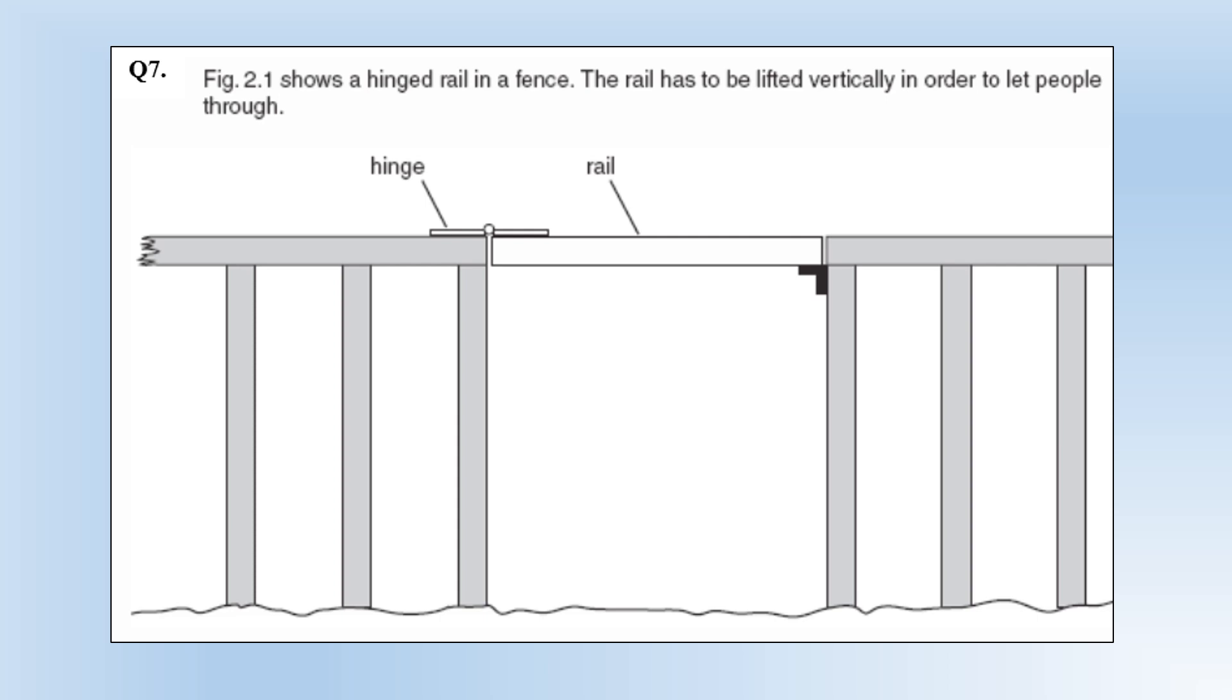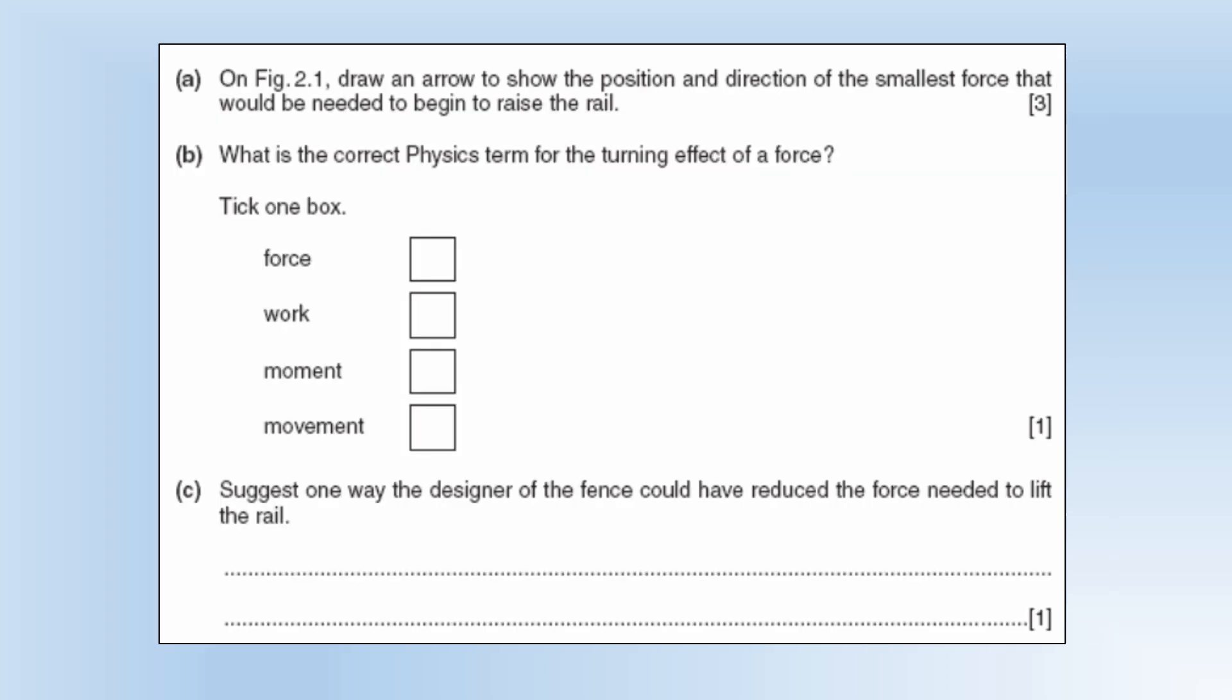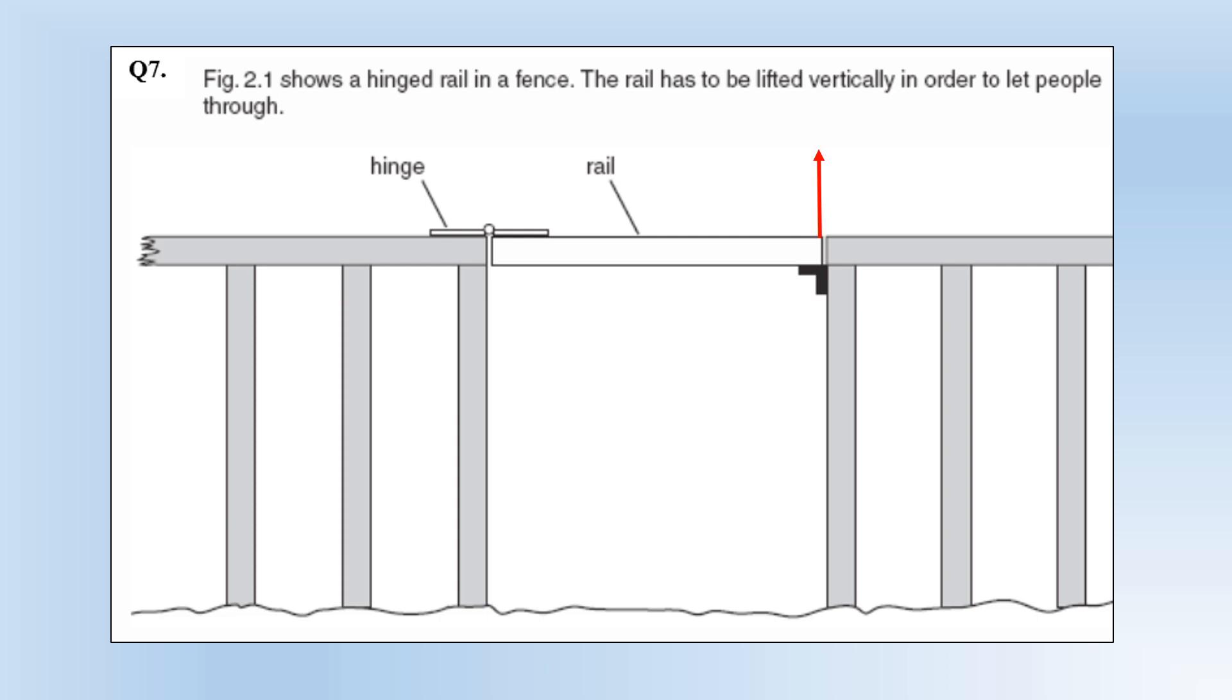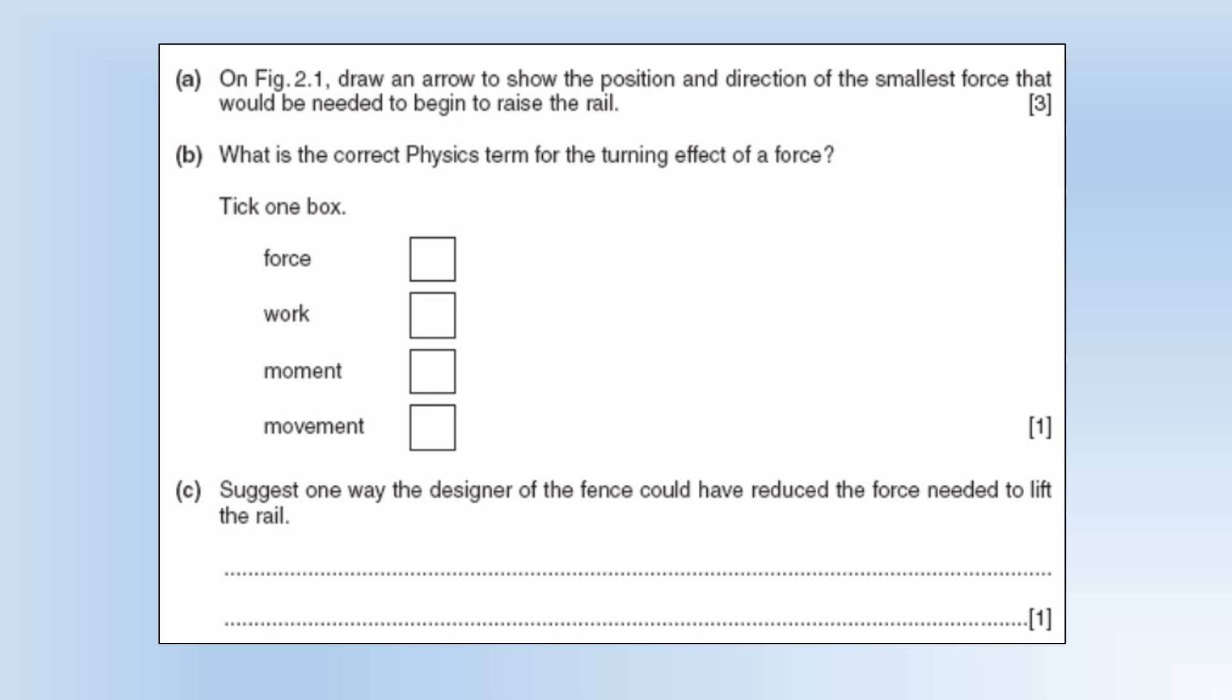The diagram shows a hinged rail in a fence. The rail has to be lifted vertically in order to let people through. Draw an arrow to show the position and direction for the smallest force needed to raise the rail. We're going to put it here and it needs to be upwards. The reason we put it here is that's the furthest you can be from the hinge, which means we've got the biggest perpendicular distance so we can have the smallest force. What is the correct physics term for the turning effect of a force? That is a moment. Suggest one way the designer should have reduced the force needed to raise the rail. Make the rail out of a lighter material so therefore it's going to need a smaller force anyway.